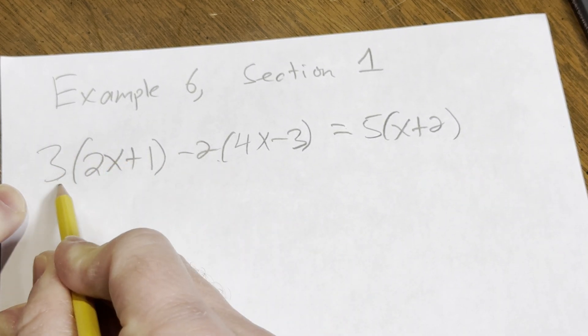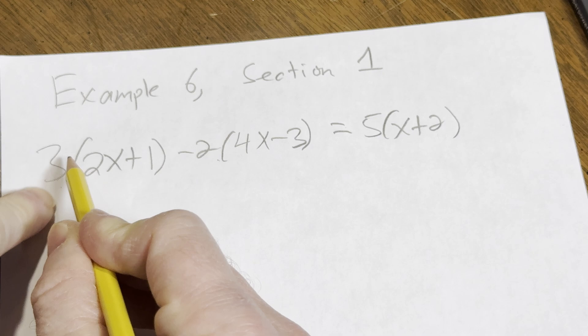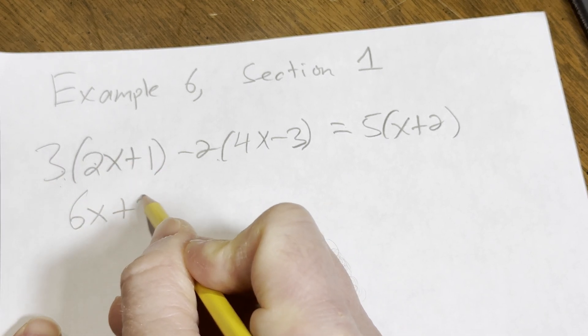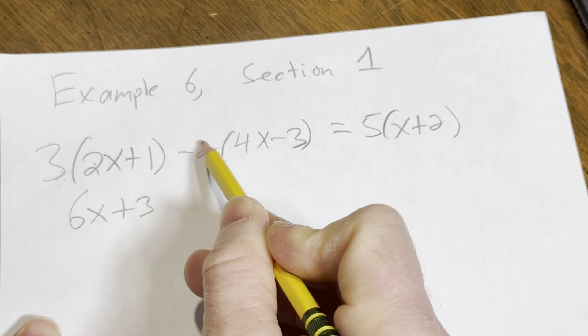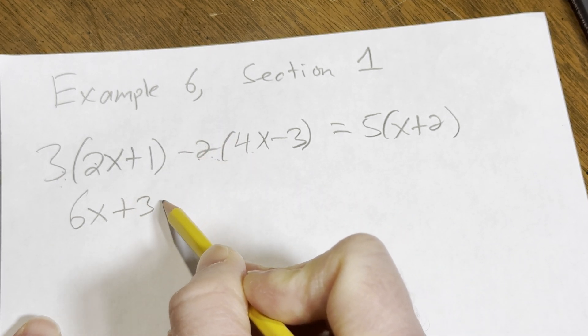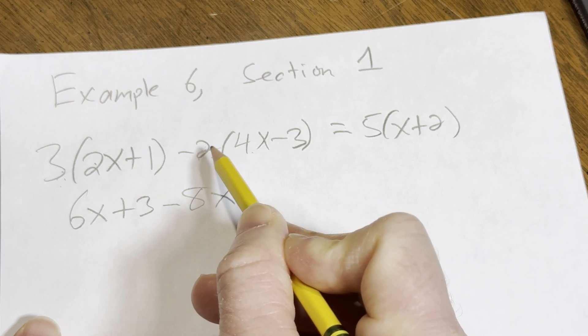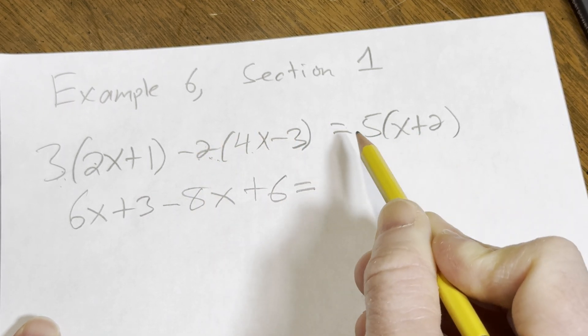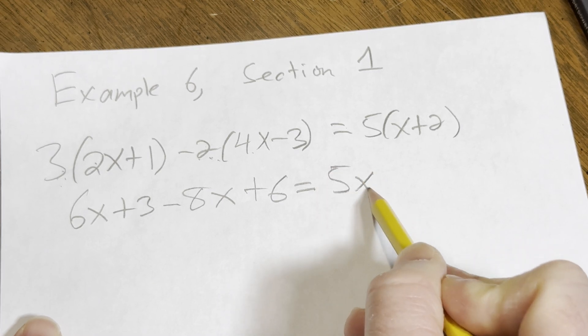Three times 2x is going to be 6x. Three times one is three. And here we have a minus two, so we do have to distribute the whole thing—the minus two. So minus two times 4x is minus 8x, and minus two times minus three is positive six. And here we have five times x, which is 5x, and then five times two, which is ten.